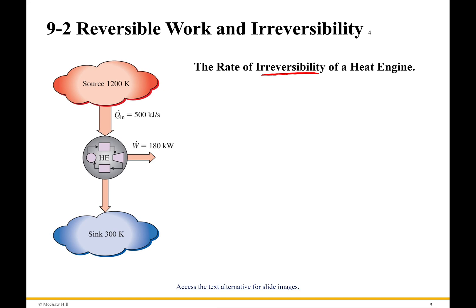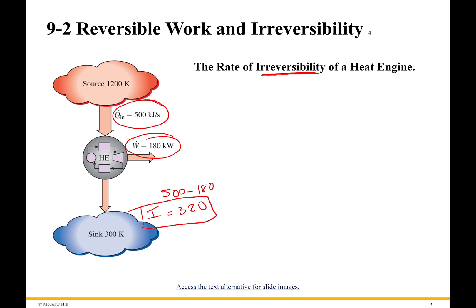Now when we see these problems, the first way you're most likely going to be tempted to solve it is kind of like this. You see you've got 500 kilojoules per second going in, and 180 kilowatts going out, so 500 minus 180 equals 320 — that's my irreversibility. However, there's an issue: that is actually wrong.